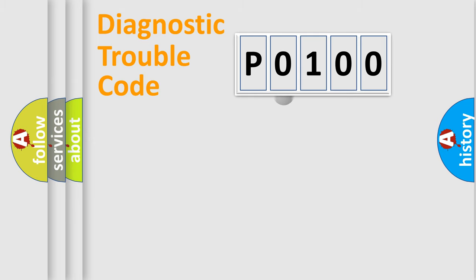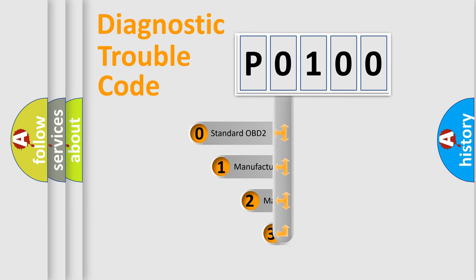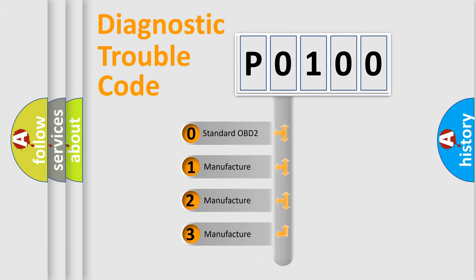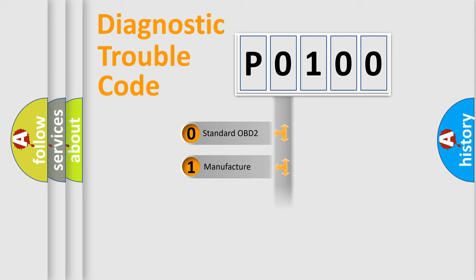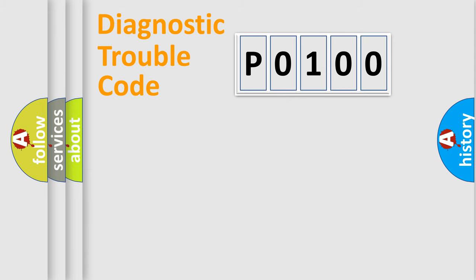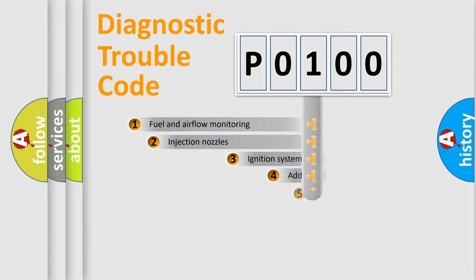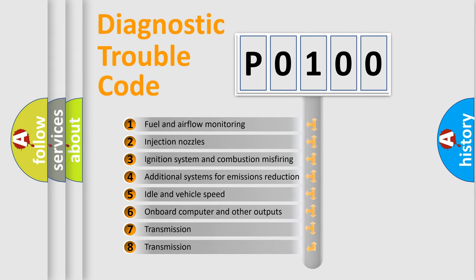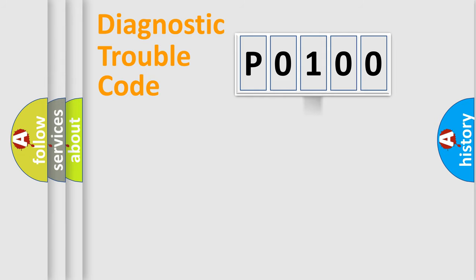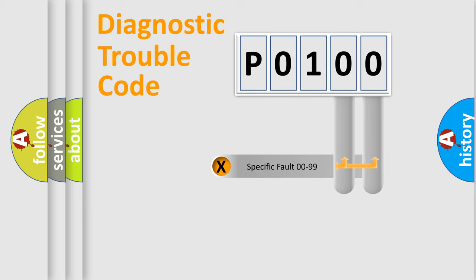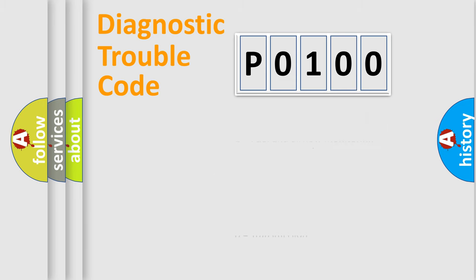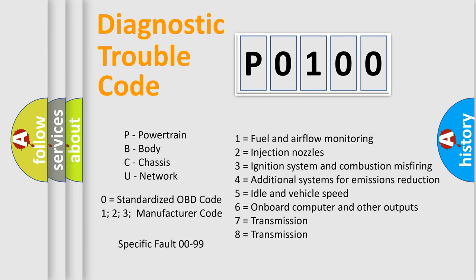This distribution is defined in the first character of the code. If the second character is expressed as zero, it is a standardized error. In the case of numbers 1, 2, or 3, it is a manufacturer-specific error. The third character specifies a subset of errors, and this distribution is valid only for the standardized DTC code. Only the last two characters define the specific fault of the group.